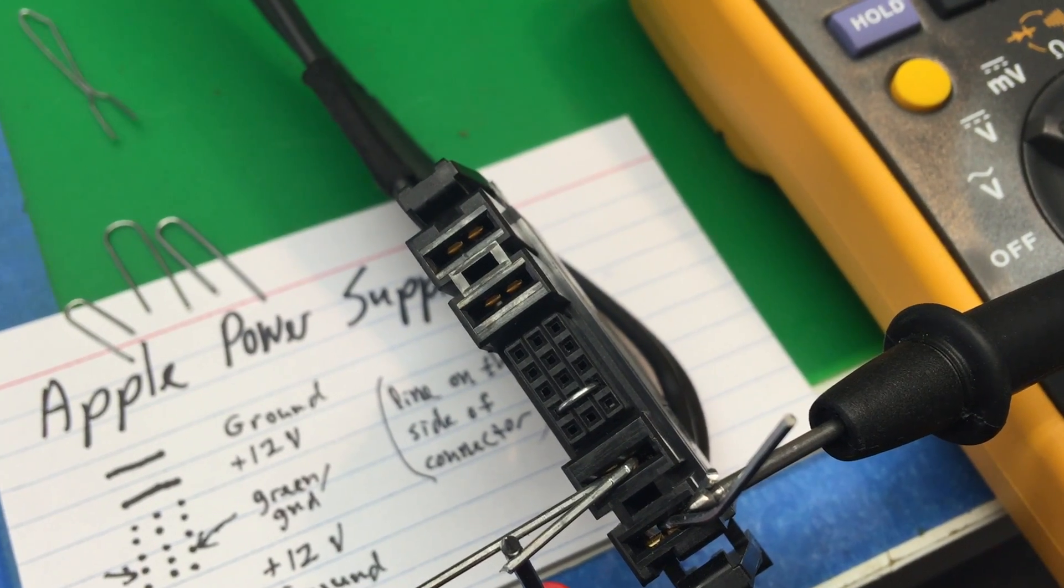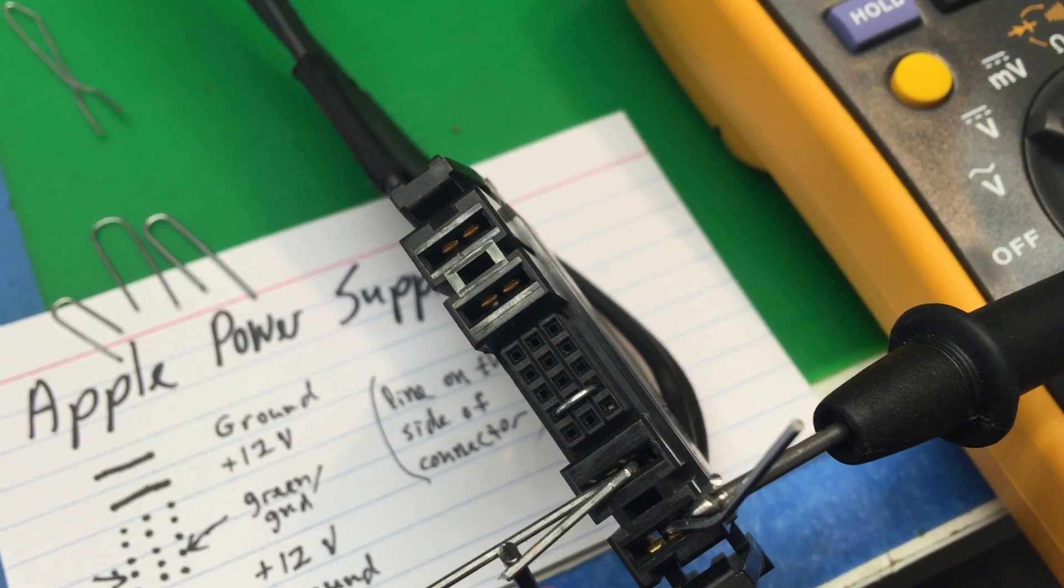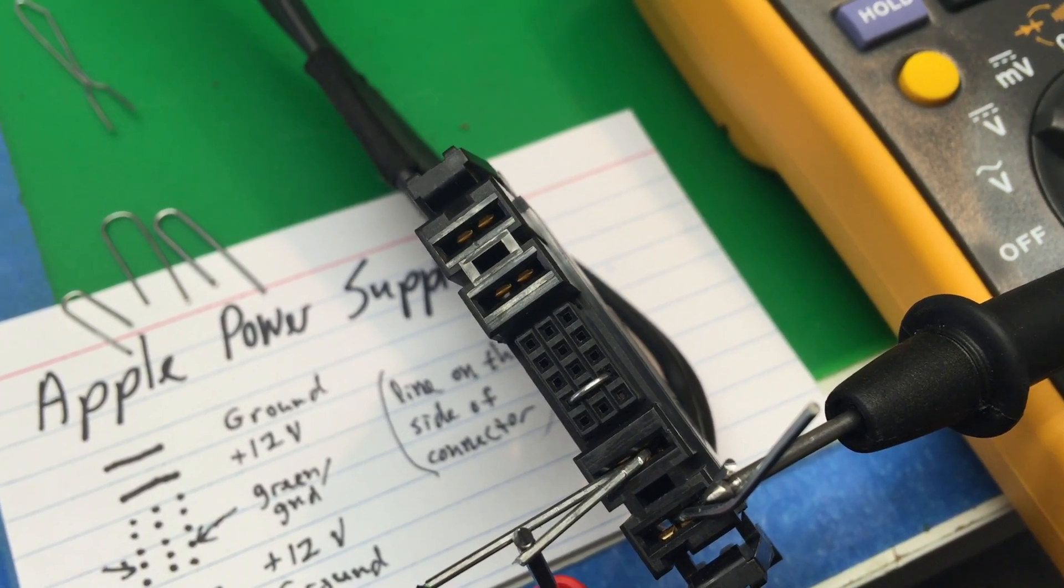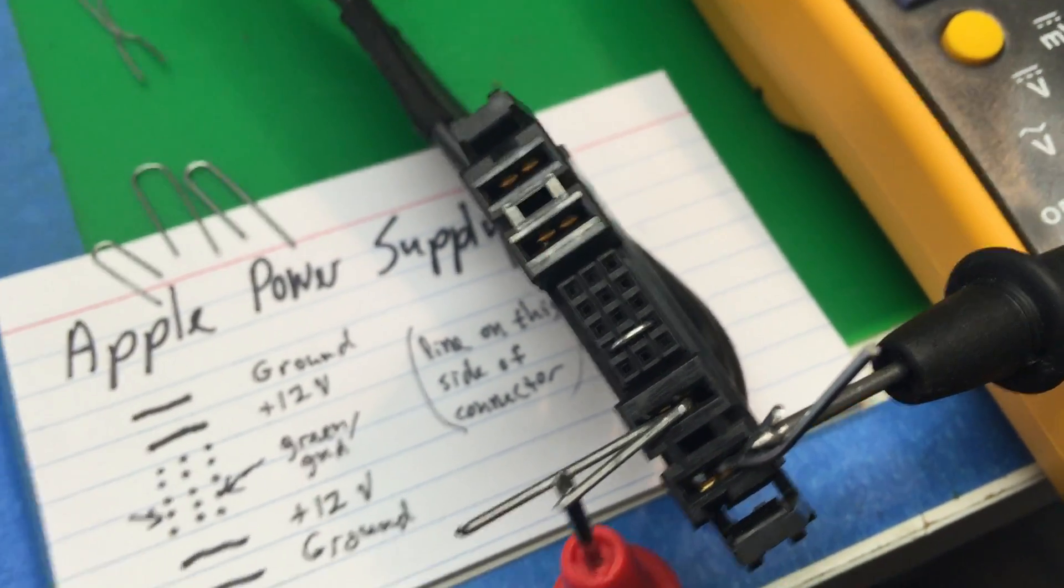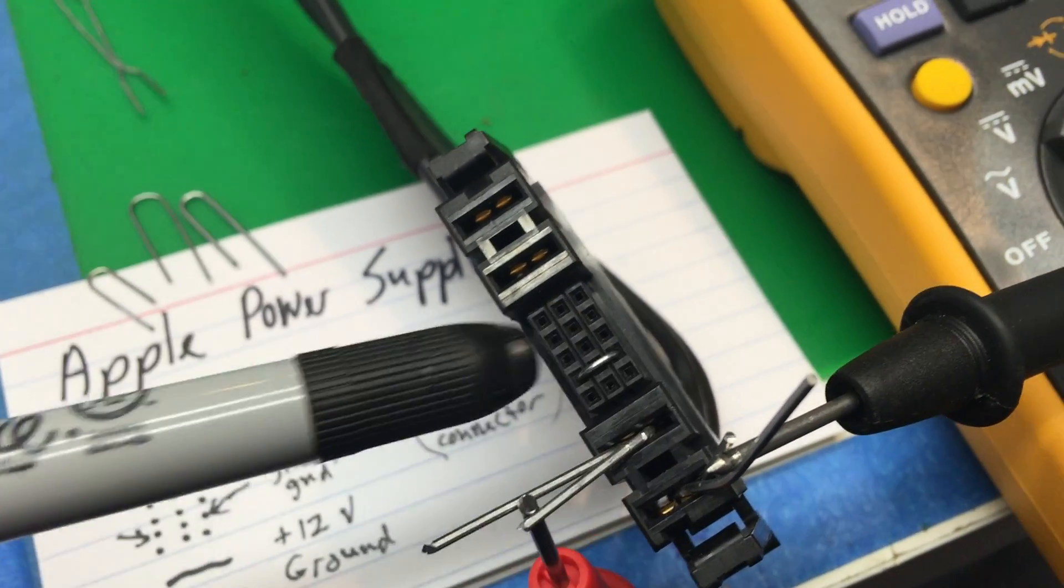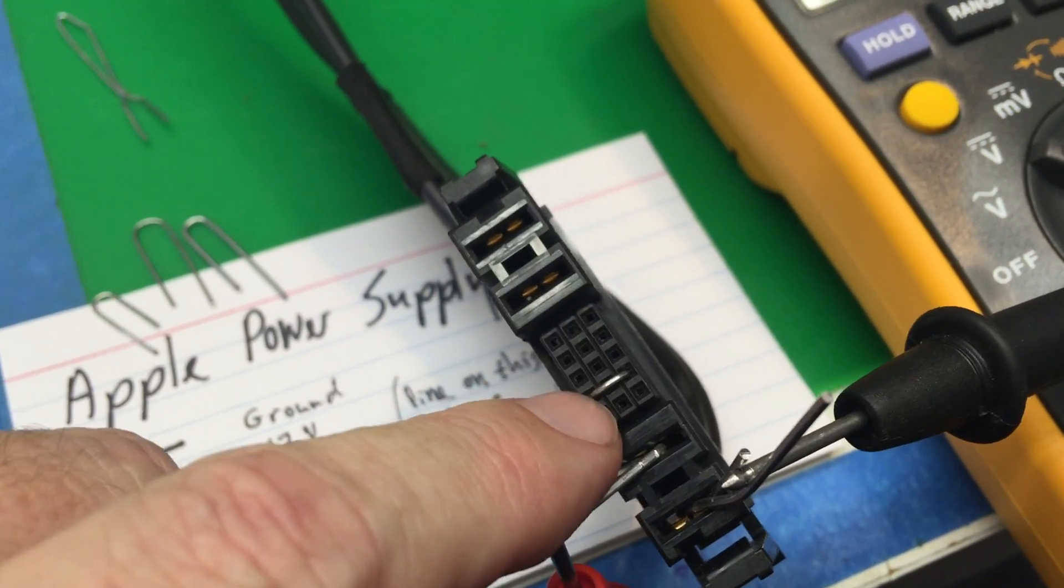And here's a quick addendum. It turns out that a paper clip is the perfect size. Just snip off the round part of one to short out the connector there. It fits in there just right.